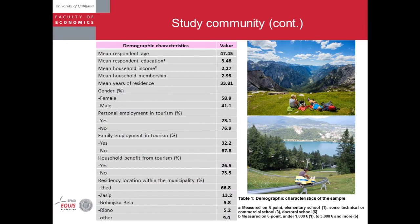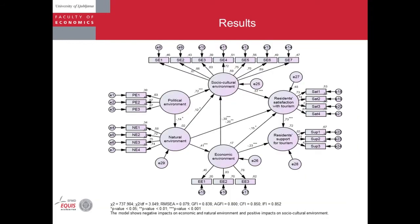Regarding the demographic characteristics of our sample: the mean respondent age was 47 years. What was really surprising is that when we look at personal employment in tourism, family employment in tourism, and household benefit from tourism, our sample includes people who actually have no economic benefits from tourism, nor does their household, nor do they rent apartments. So the answers are also quite surprising.